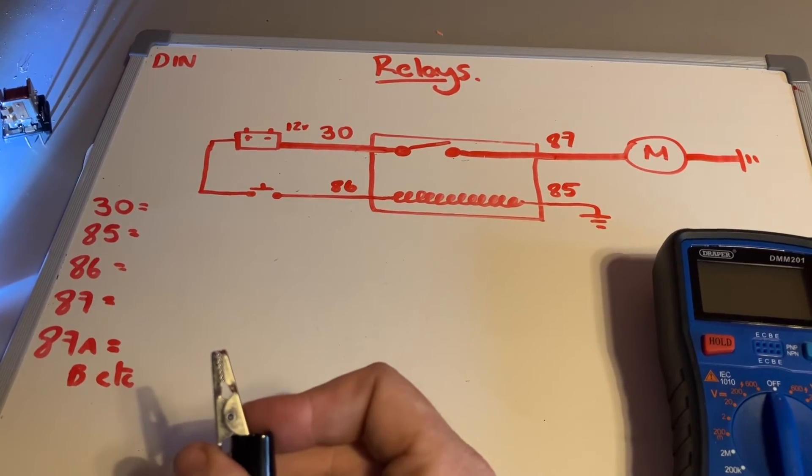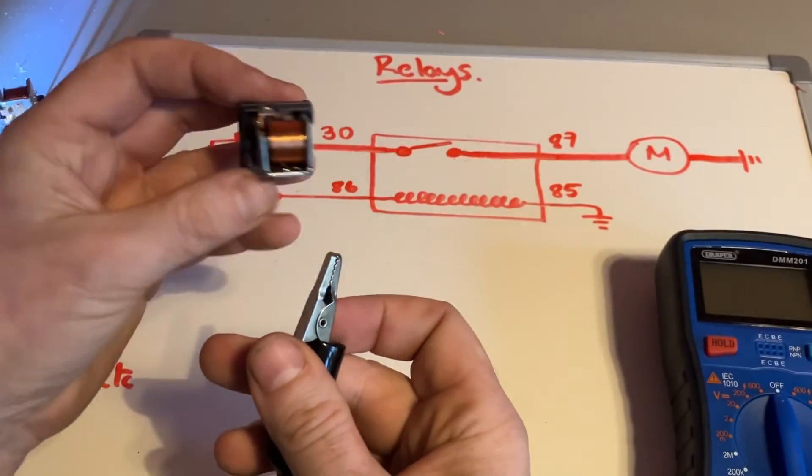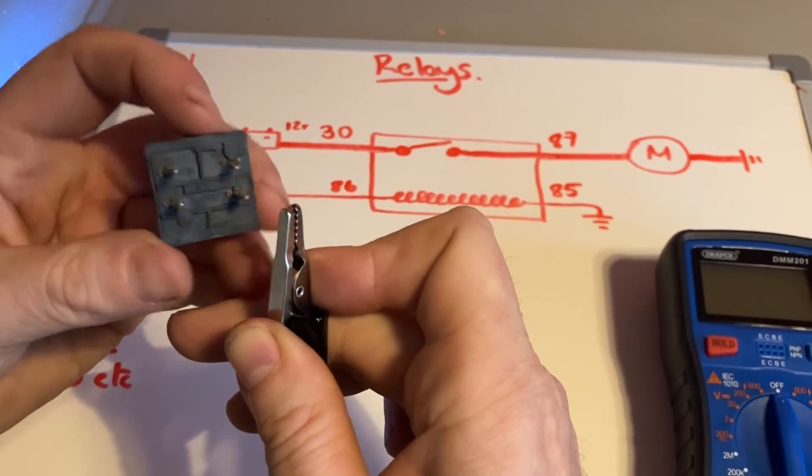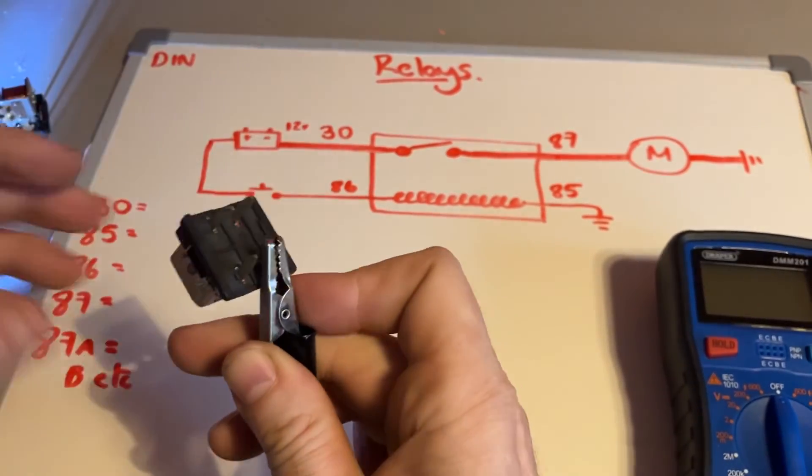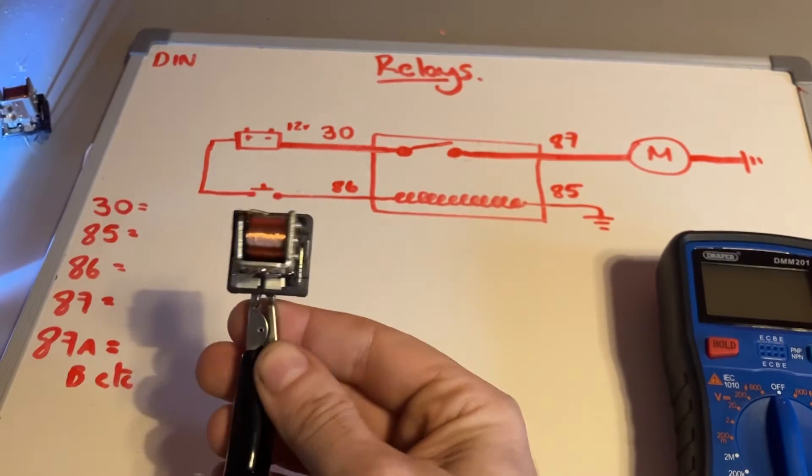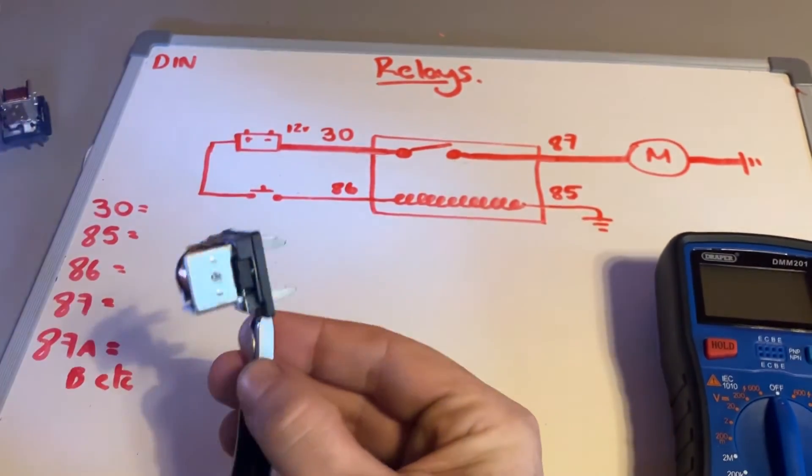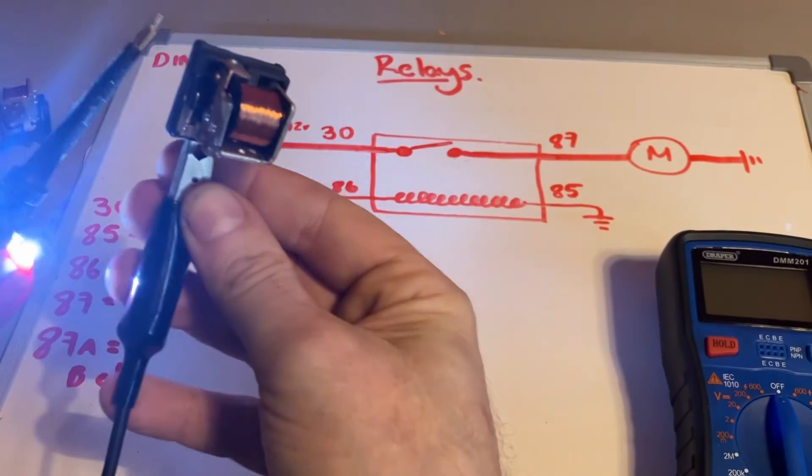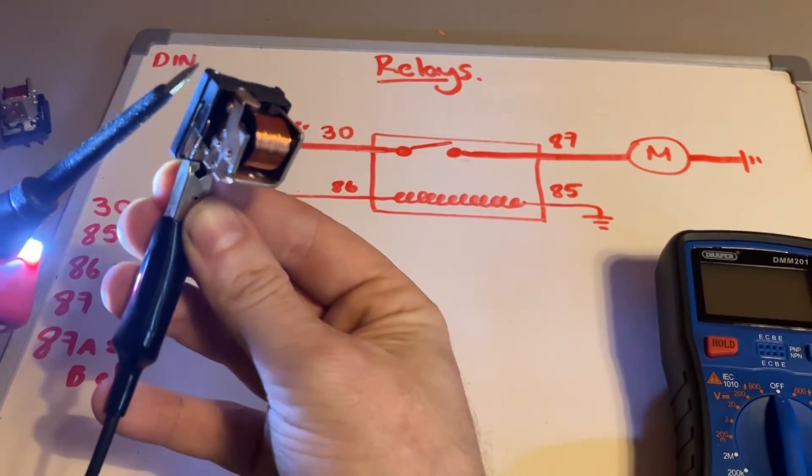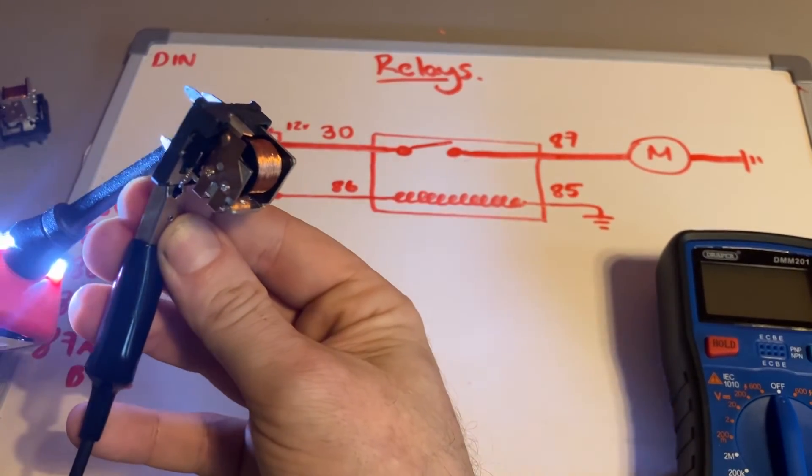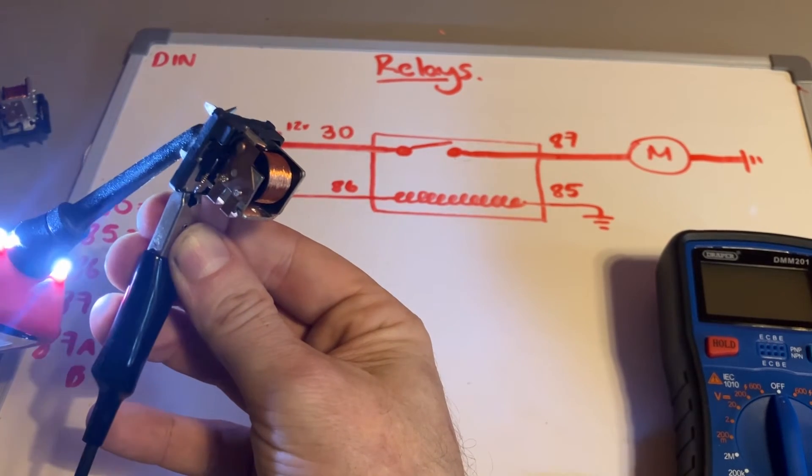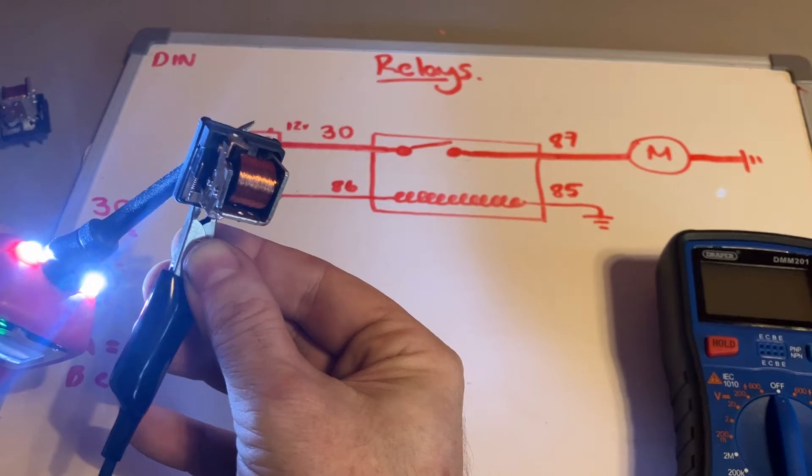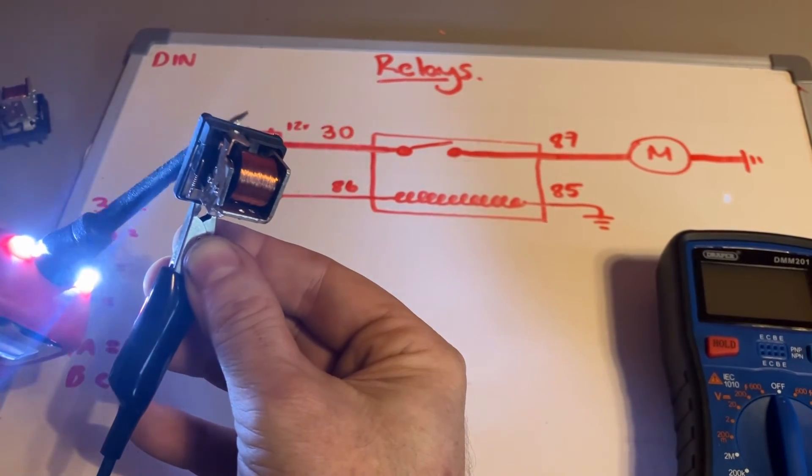And I'm going to try one more just to prove that it does work. So again we're going to go through 85 on here and I'm going to energize it on 86, which is on these ones, this is the opposite corner, so over here. And hopefully you'll be able to see that switch close. Hopefully you can see that switch is closing, so that relay is working - you can hear it as well.